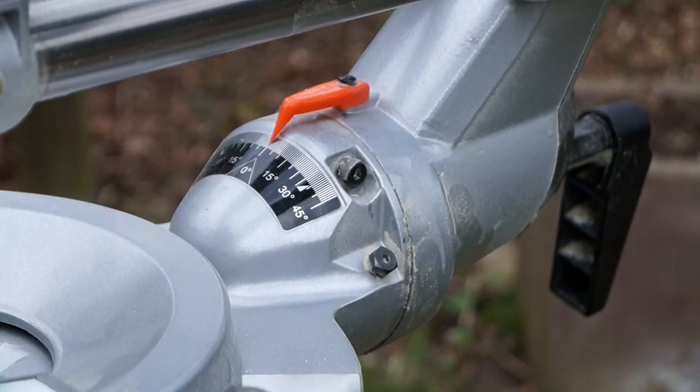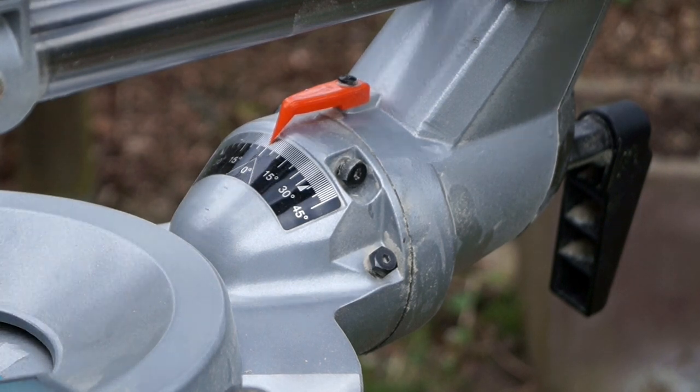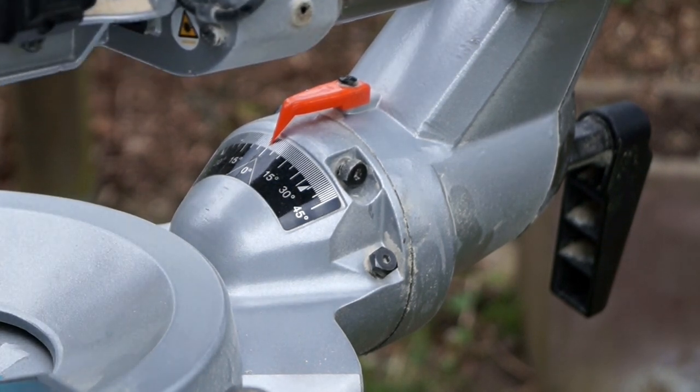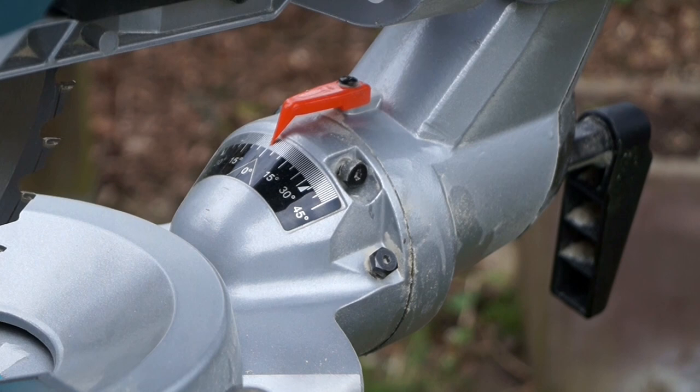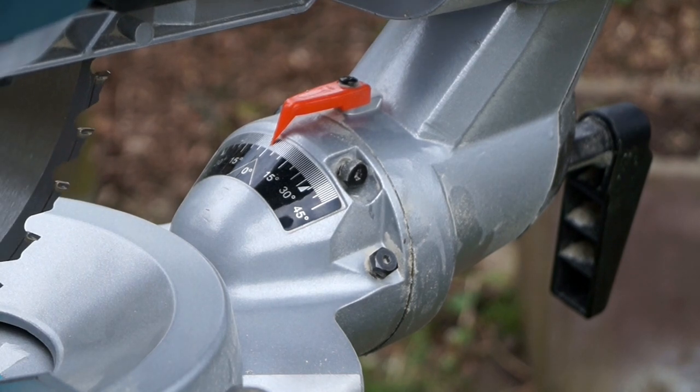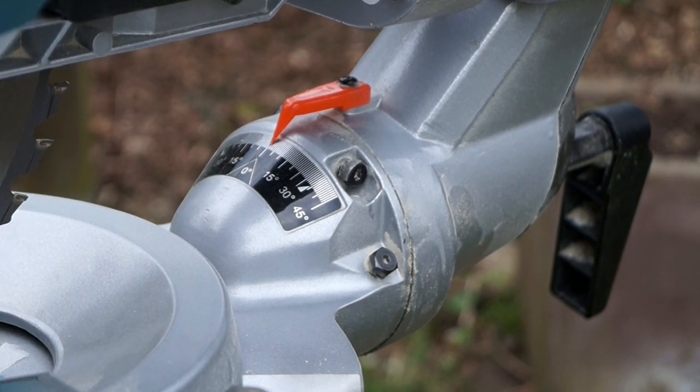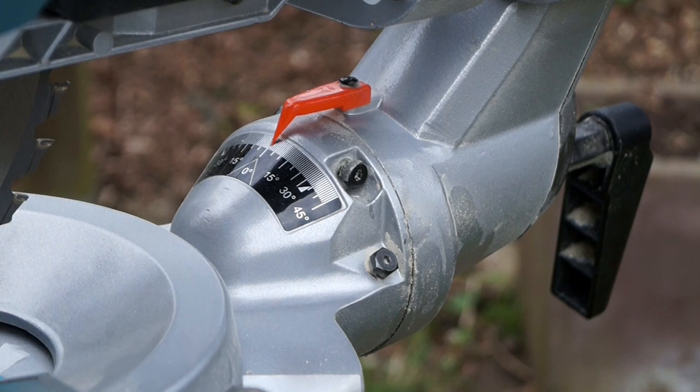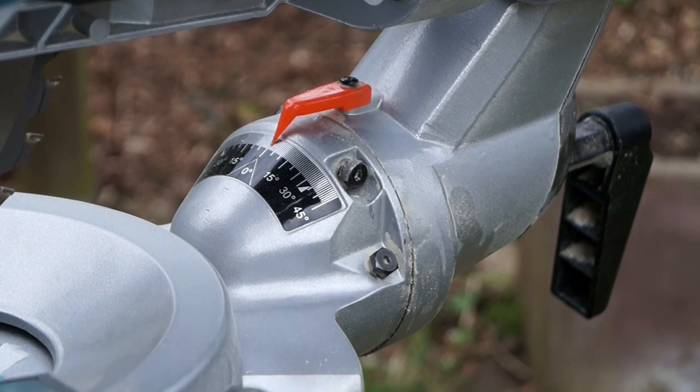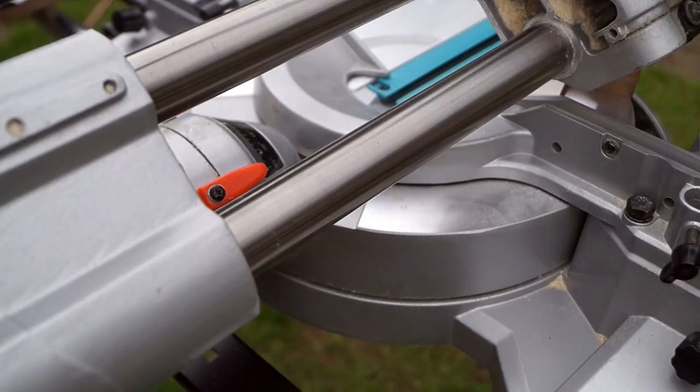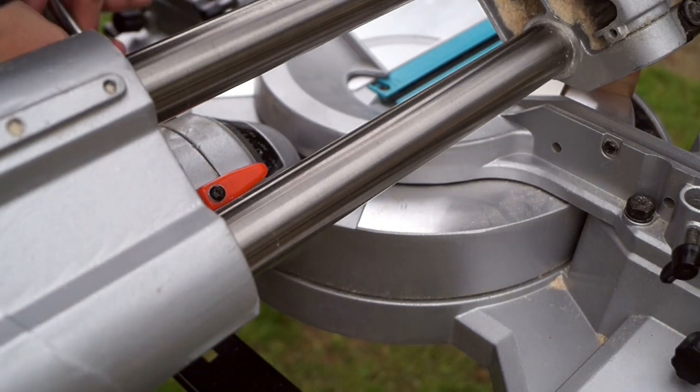Loosen the lever on the back first, then tilt the saw blade to its left. The adjusting bolt for this will be on the right side of the bevel scale, and it's the lower bolt. Then it's the same as it was with the zero degree bolt. Tilt it till the pointer is on the 45 degree mark, then check with your bevel gauge. Make a test cut.